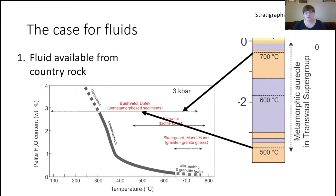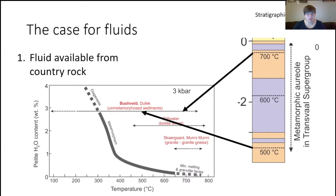The fluids I'm talking about today would originate from the dehydration of the country rock. The figure on this slide shows the progressive loss of H2O in a pelite undergoing prograde metamorphism as a function of temperature at three kilobars pressure. Sediments at Bushveld were previously unmetamorphosed, so they had about three weight percent H2O available, and at Bushveld temperatures of 700 to 500 degrees, that fluid would have been liberated during emplacement by metamorphism. Based on the thickness of the aureole, the amount of fluid generated would be equivalent to a body of water 90 meters thick per kilometer of rock dehydrated. We want to investigate evidence for this fluid having at least in part migrated into the Bushveld complex.